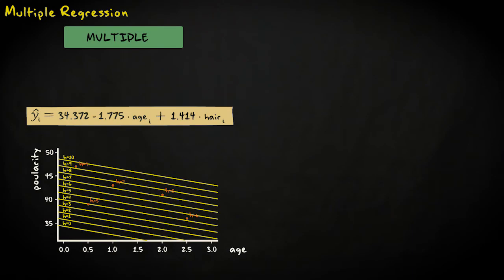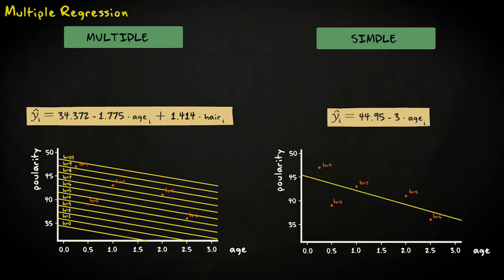Another thing to note is that the value of the regression coefficient for age in our multiple regression equation is different from the value in the simple regression equation, even though the observations are the same. In the simple case with just age as predictor, we consider the relation between cat age and popularity, while ignoring all other variables.